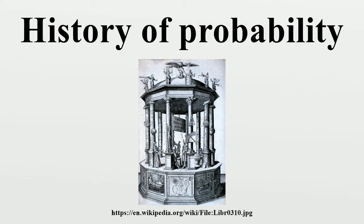Ancient and medieval law of evidence developed a grading of degrees of proof, probabilities, presumptions, and half-proof to deal with the uncertainties of evidence in court. In Renaissance times, betting was discussed in terms of odds such as 10 to 1, and maritime insurance premiums were estimated based on intuitive risks, but there was no theory on how to calculate such odds or premiums. The mathematical methods of probability arose in the correspondence of Gerolamo Cardano, Pierre de Fermat, and Blaise Pascal on questions such as the fair division of the stake in an interrupted game of chance.